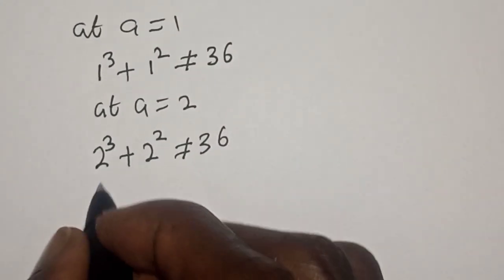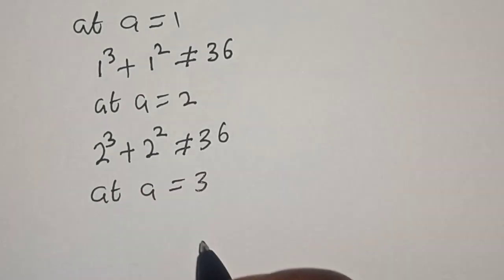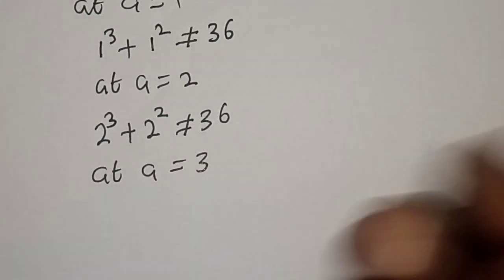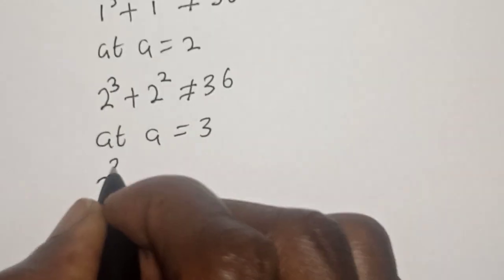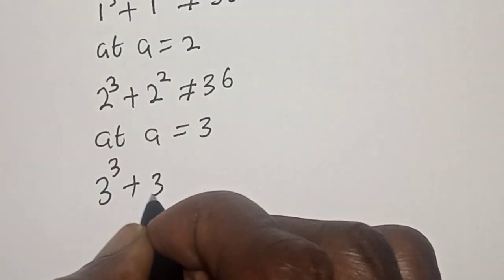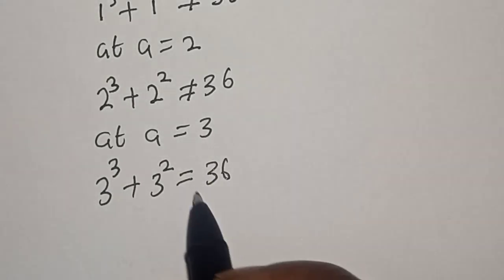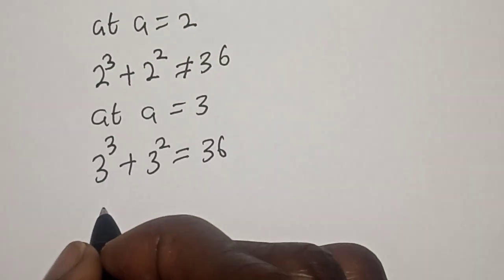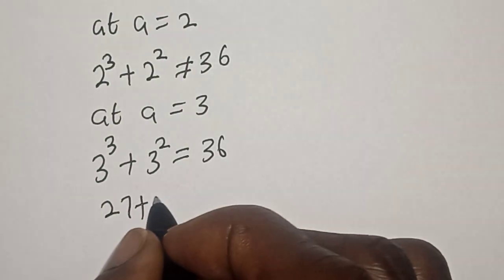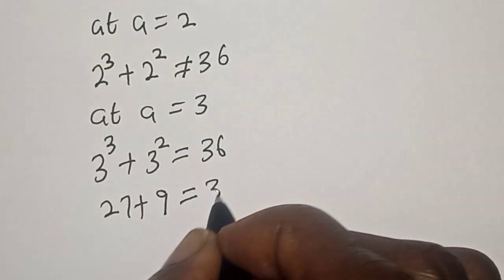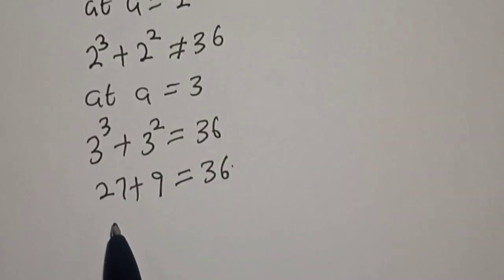Now let's see at a equal to 3. Three raised to power 3 plus three squared is equal to 36, because three raised to power 3 is 27 plus three squared is 9, which gives 36. So a equal to 3 is one of the roots.